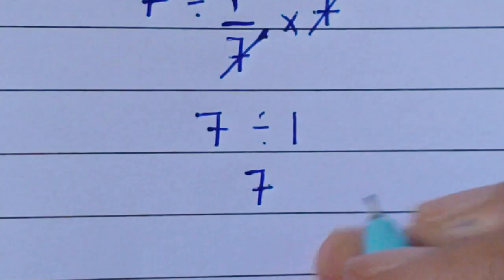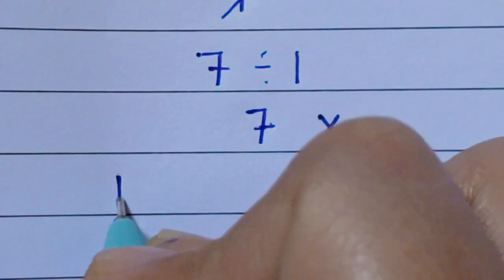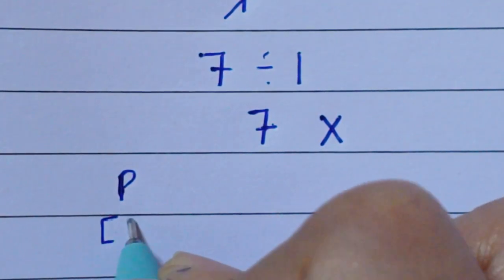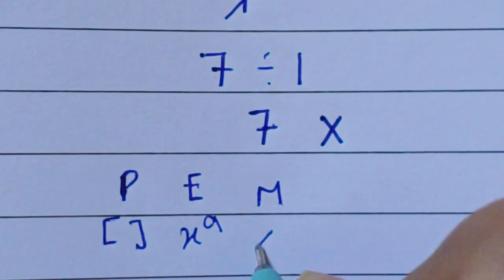According to order of operations which is PEMDAS, where P stands for parenthesis, E stands for exponent, M stands for multiplication, D stands for division, A for addition, and S for subtraction.